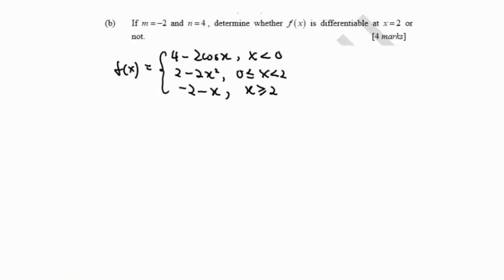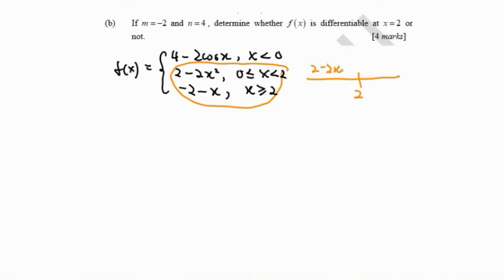For question b, given m equals negative 2 and n equals 4, we want to determine whether the function is differentiable at x equals 2. To determine differentiability, the first principle must exist, which means the limit at x equals 2 must exist. We examine this at x equals 2.